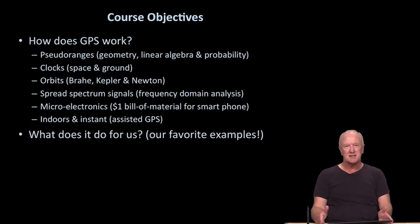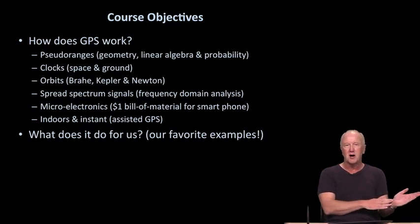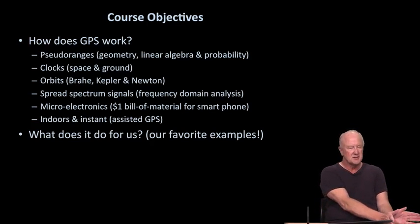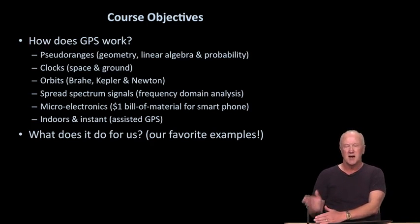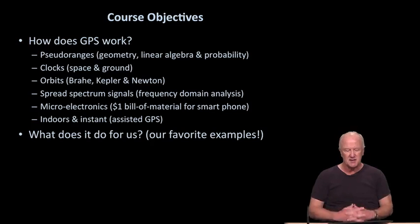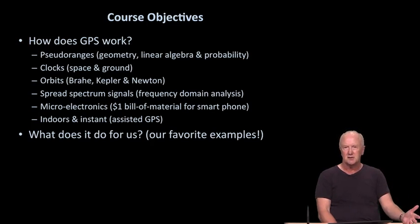Microelectronics, we won't address that explicitly, but clearly Moore's law has benefited GPS enormously. The cost of a processor and the cost of the other integrated circuits required to implement GPS has dropped dramatically from the 1970s, where the first GPS receivers cost on the order of $200,000 through to today, where a smartphone includes a GPS receiver, which cost about $1. And then another big emphasis will be indoors and instant. This is so-called assisted GPS, and Professor Van Degelen is a master of that field. And so we're fortunate that he will guide us through it.